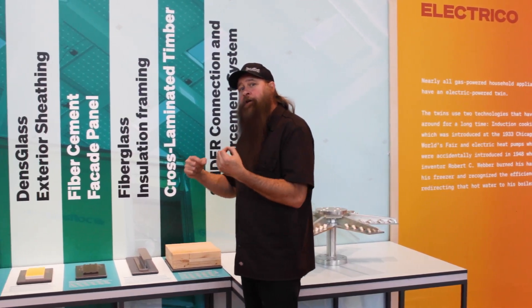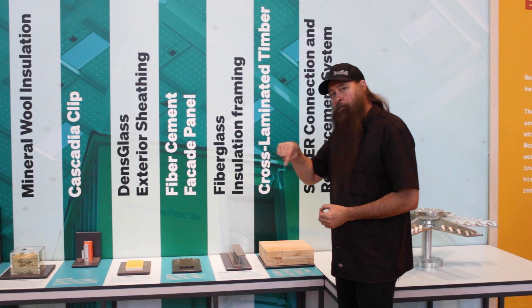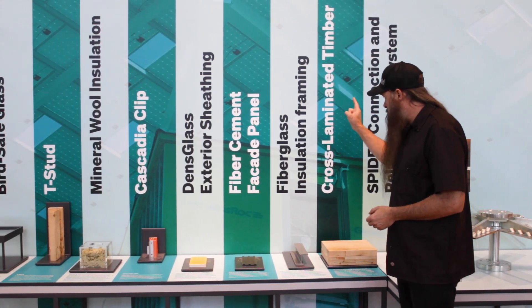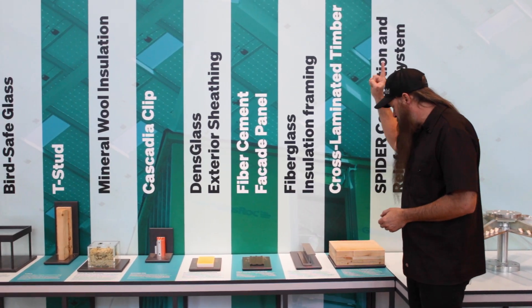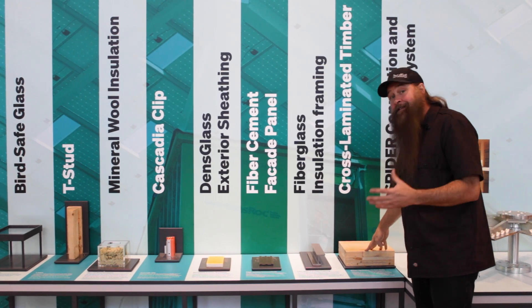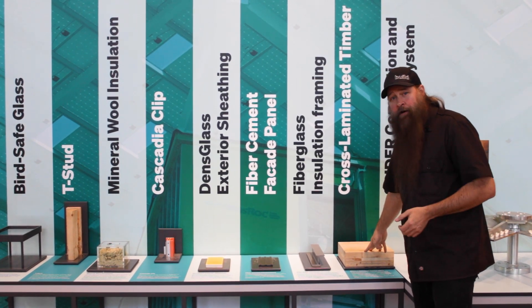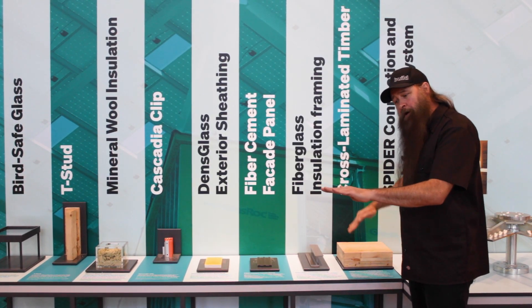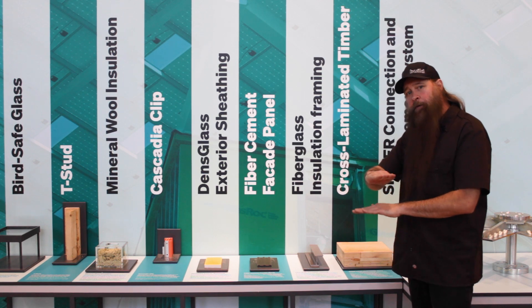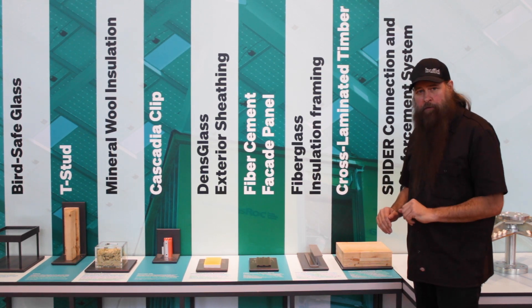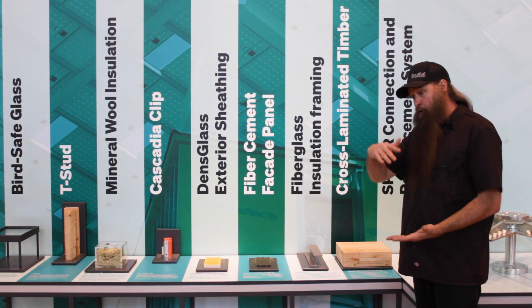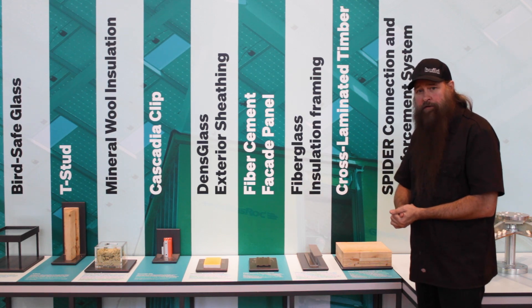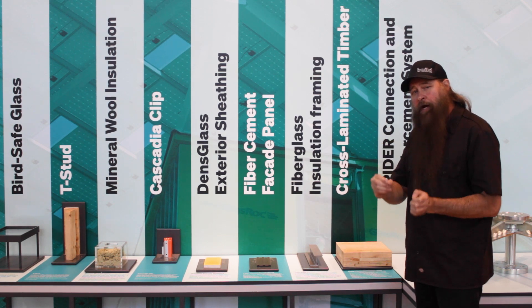Mass timber is a topic you'll keep hearing in your meetings. One form of mass timber is cross-laminated timber — CLT is the acronym. You have a layer going this way, a layer going this way, and a layer going this way. You could have up to seven layers of varying thicknesses, depending on what the structural engineer calls for.